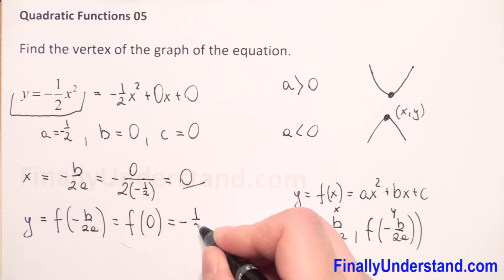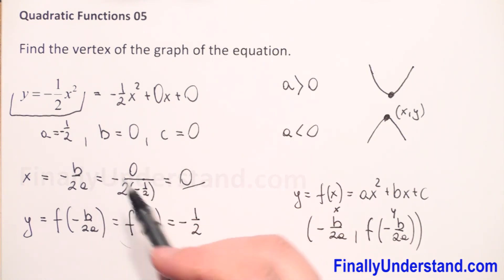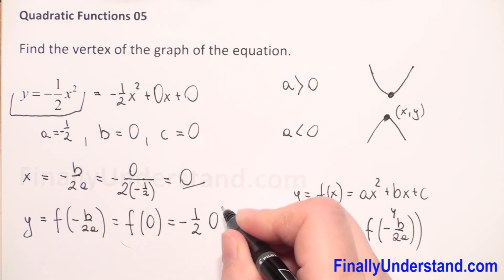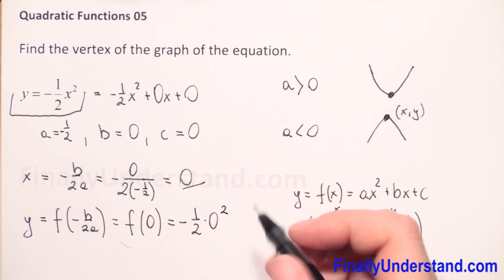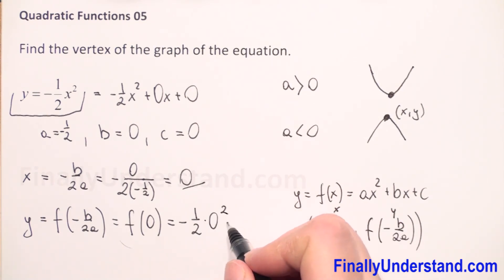It means we have to substitute x in our equation by zero. So this is equal negative one half, and instead of x we have zero to second power. Zero to second power is zero, zero times negative one half is zero. So we have that the vertex is zero zero. This is my solution.